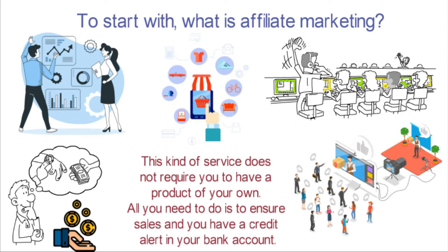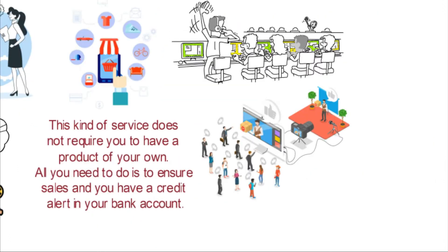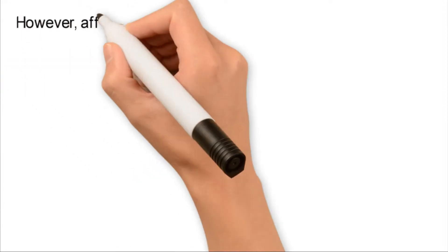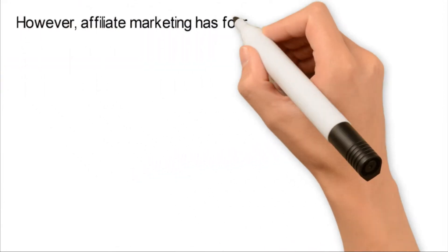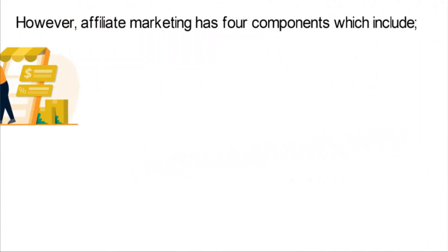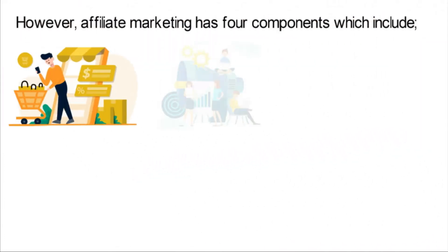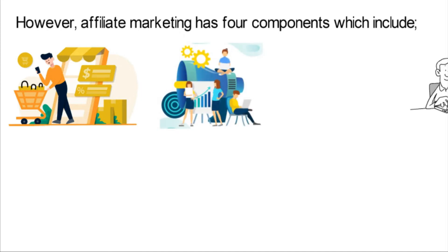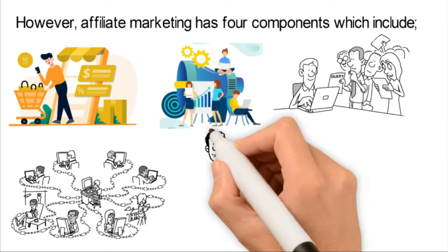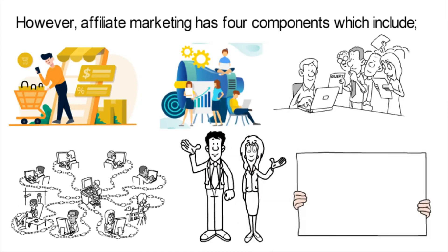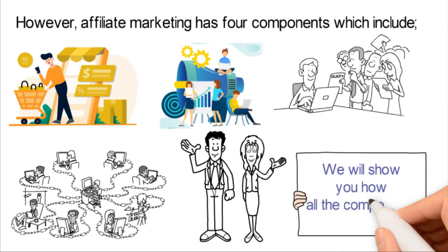All you need to do is ensure sales and you'll have a credit alert in your bank account. Affiliate marketing has four components which include the merchant, the affiliate, the customers, and the network. We will show you how all the components work.